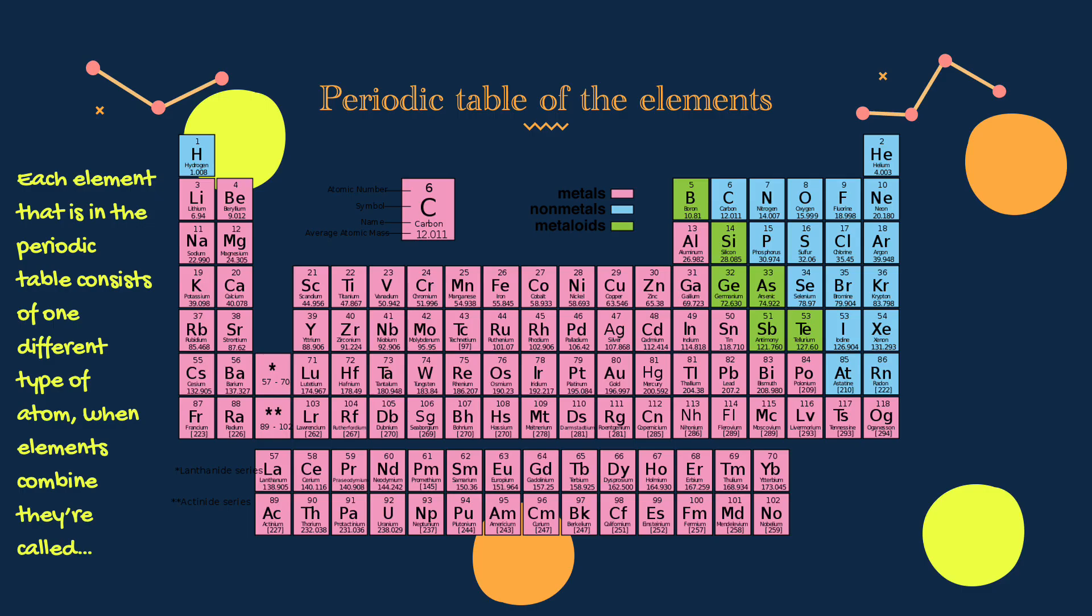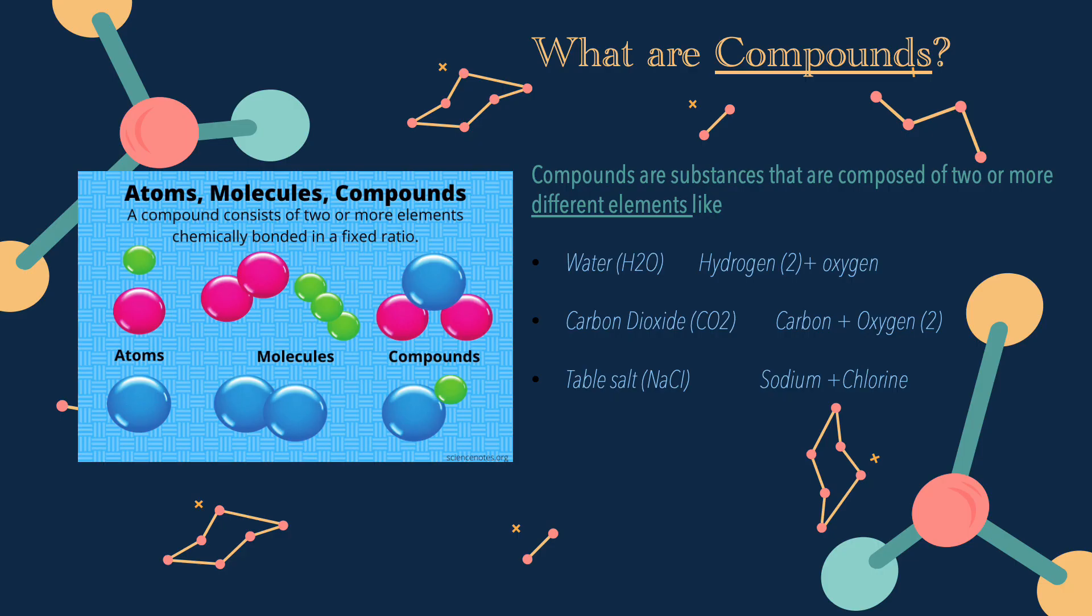Each element that is in the periodic table consists of one different type of atom. When different elements combine, they're called compounds. Compounds are substances that are composed of two or more different elements, like water, carbon dioxide, and table salt.